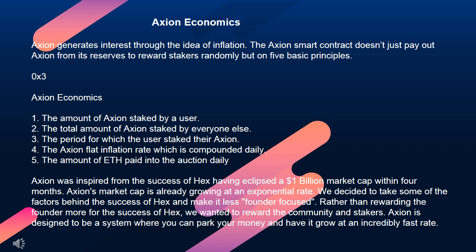The 5 principles are: 1. The amount of Axion staked by a user. 2. The total amount of Axion staked by everyone else. 3. The period for which the user staked their Axion. 4. The Axion flat inflation rate, which is compounded daily. 5. The amount of ETH paid into the auction daily. Axion was inspired by the success of HEX, having eclipsed a $1 billion market cap within 4 months.